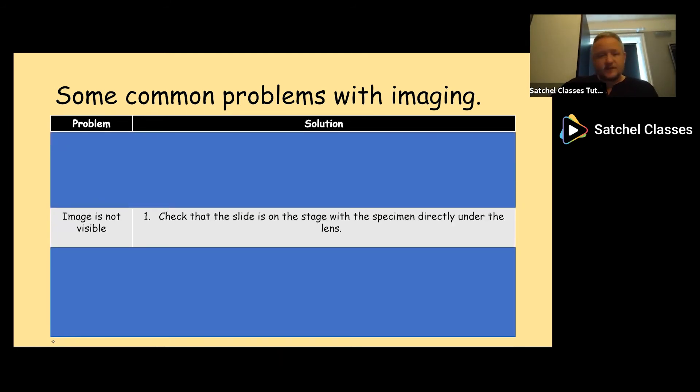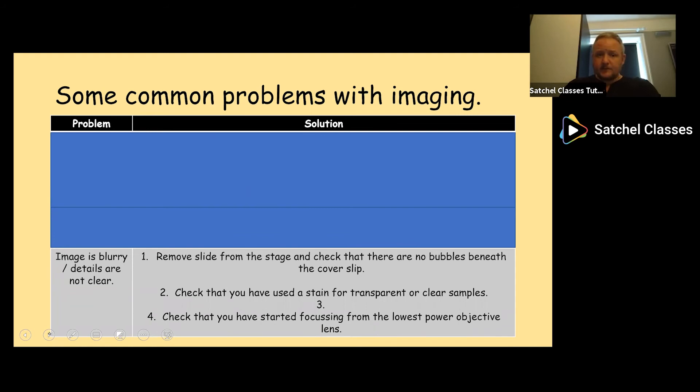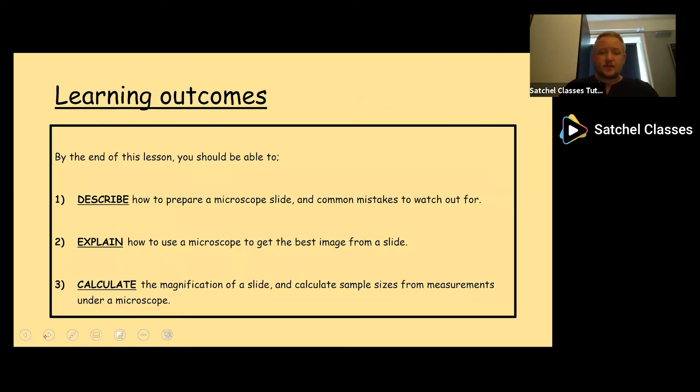Image is not visible. Sometimes you've checked all the things, you've got your slide on, everything seems to be working but you can't see anything. It might be that the slide is on the stage but the specimen is slightly moved over to the right or left and not over the hole in the stage, which means it's not under the lens directly. If that's the case, just adjust your slide so you can see more clearly. Final problem: image is blurry, details are not clear. First thing to do, remove the slide from the stage, check there are no bubbles between the cover slip and the specimen. Second, check you've used a stain for transparent or clear samples, for example iodine for onion cells or methylene blue for cheek cells. Third, check you've started focusing from the lowest power objective lens. If you try from the highest magnification you'll find it very difficult to make out clear images. Always start on the lowest and work your way through.